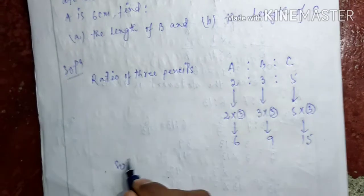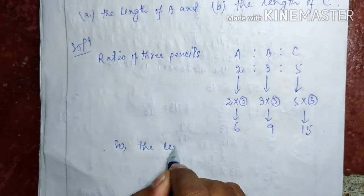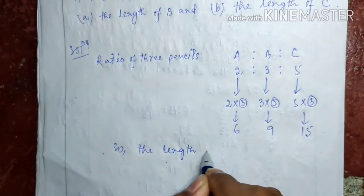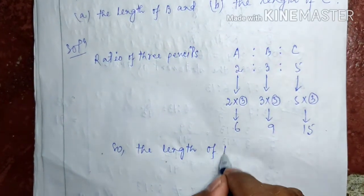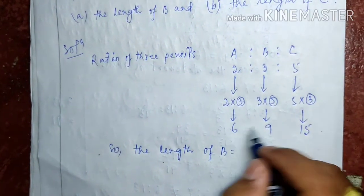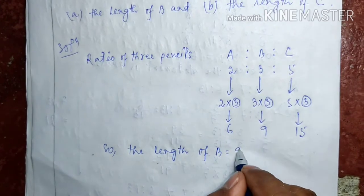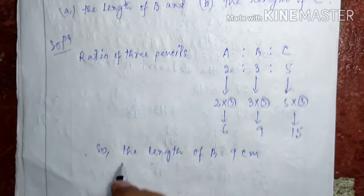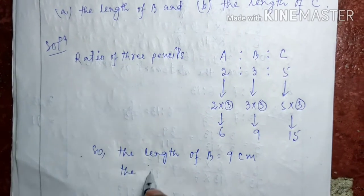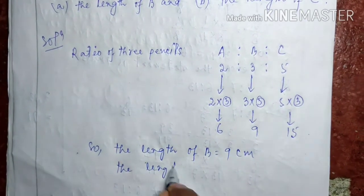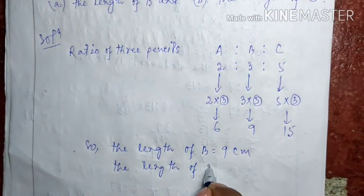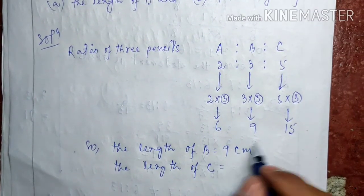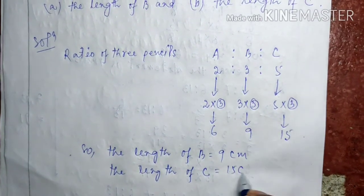The length of B equals, length of B is 9 cm. And length of C equals 15 cm.